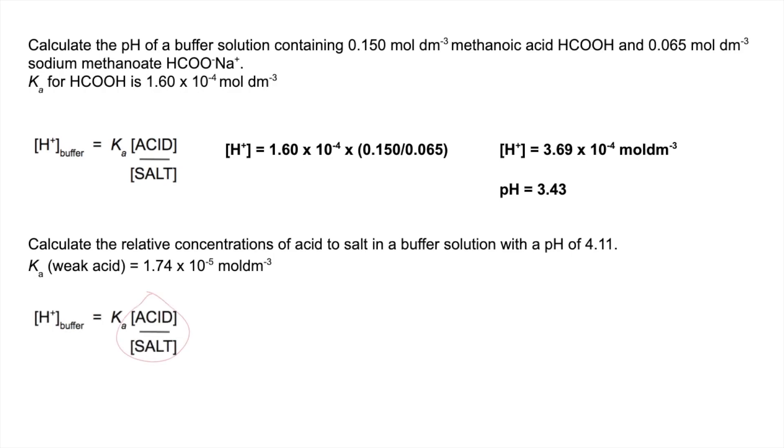The acid to salt ratio is actually that part of the expression there, so we just need to get rid of the Ka term. So if we divide the other side by Ka, we get that. And then we need to work out the H+ concentration from the pH.